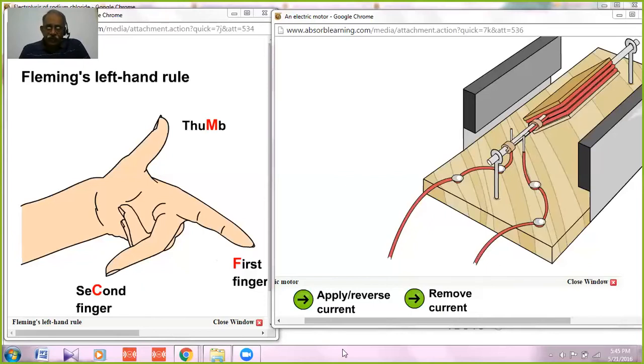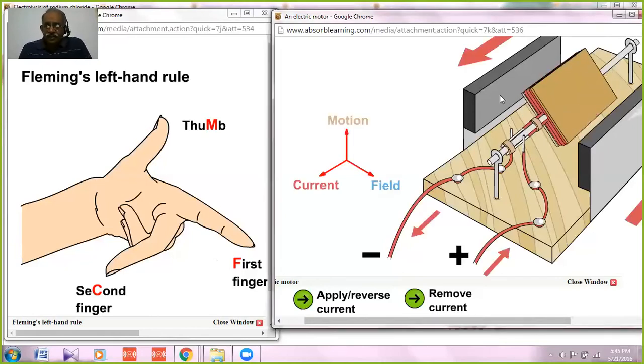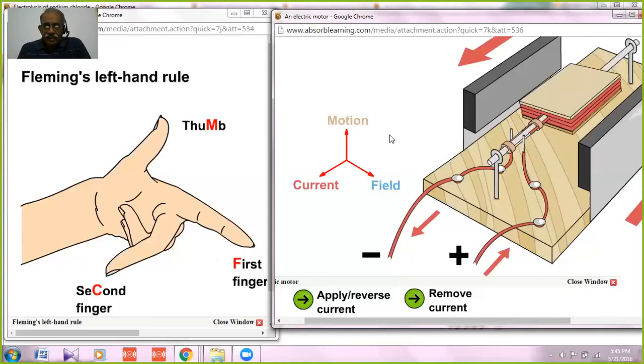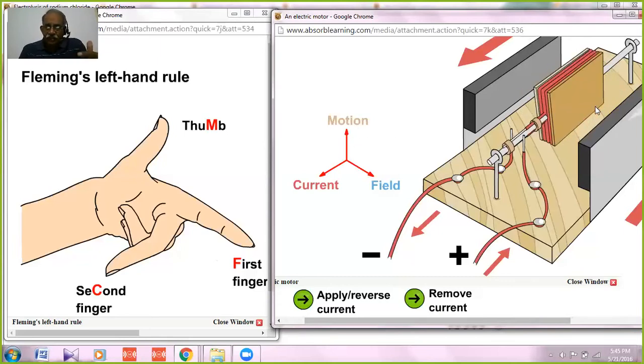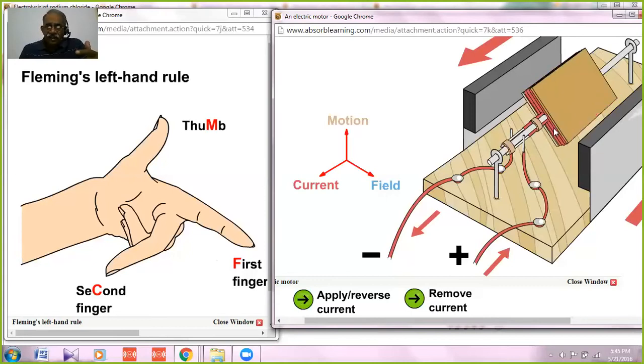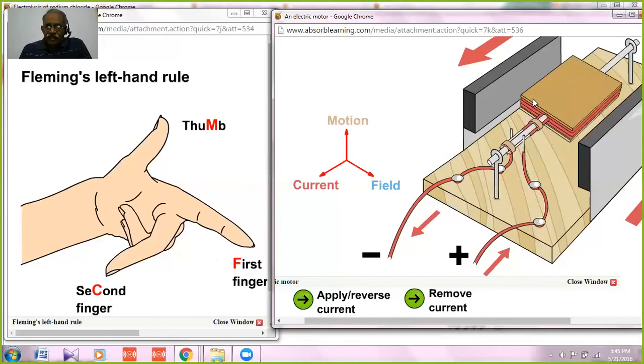Now what happens when you apply a current? Now let us see. We apply a current here. See, this is the motion. The motion of the deflection of this carrying conductor is towards the thumb. Now the direction of the field is towards this side, the current is towards this side.